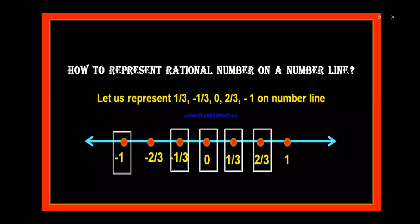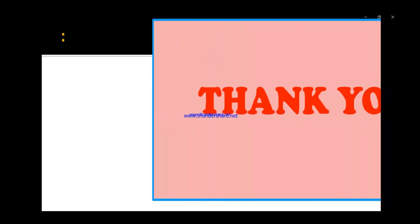Like this, you can represent any given rational number on the number line. This number line is a straight line, and on this straight line there are an infinite number of points. A straight line is nothing but a set of infinite points. As there are infinite points, every point may represent a number. Therefore, every rational number can be represented on a number line, and every irrational number can also be represented on this number line. Every point on this number line represents a unique number.